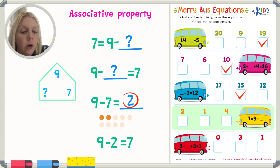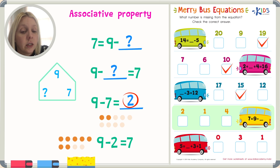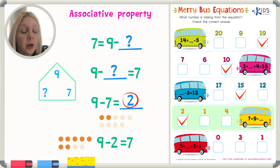Let's make sure: nine minus two should equal seven. Counting nine dots, removing two, I'm left with seven. It does equal seven. So two is my answer, and I'm going to put a check next to two.